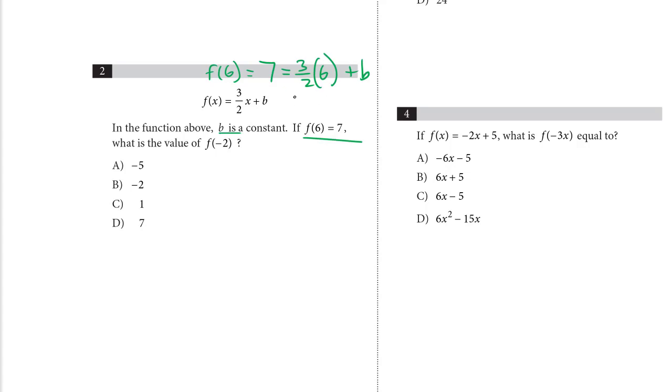So that's 18 over two, seven equals nine plus b, b equals negative two.